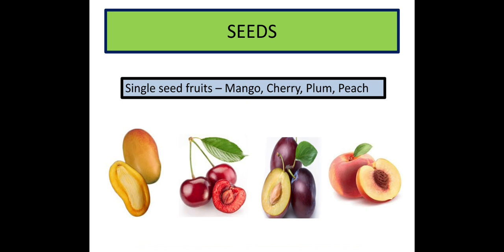Very good! You have been able to identify that so quickly. Mango has a single seed. Cherry may also have a single seed. Plum - aalu bakhara - also has a single seed. And a peach - aalu. So mango, cherry, plum, peach, they have a single seed. Similarly, avocado - though we don't find avocados in India mainly - but even that fruit has a single seed.